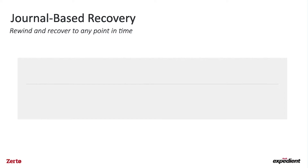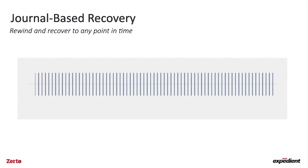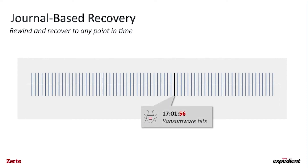Everything we do is continuous — we continually protect your VMs on the production environment and store all of those changes in a journal which can hold up to 30 days of data. Within that journal we insert checkpoints every five seconds. These points in time are consistent across all VMs within that virtual protection group, giving you incredible granularity.